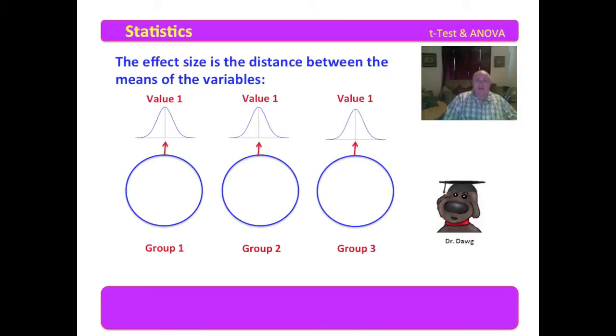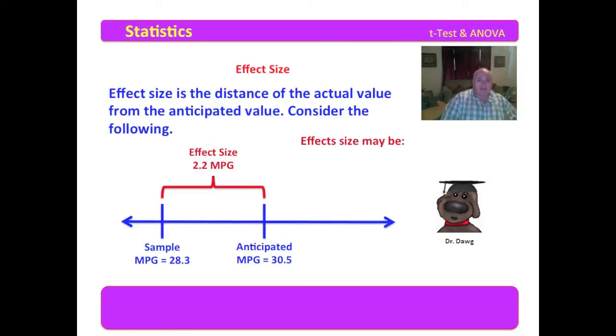The effect size is the distance between the means of the variables. You'll notice that in an ANOVA, we have three groups, and we have a distribution of the value that we're looking at for each of those groups. So we would have a difference between the mean of each of these. The effect size is the distance of the actual value from the anticipated value.